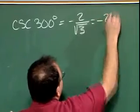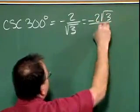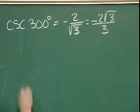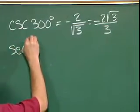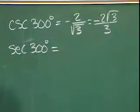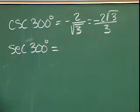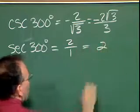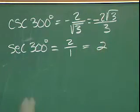We need to rationalize that denominator, so that would be negative two square roots of three over three. What about the secant of 300 degrees? The secant of 300 degrees is the reciprocal of cosine, two over one, or in other words, two.